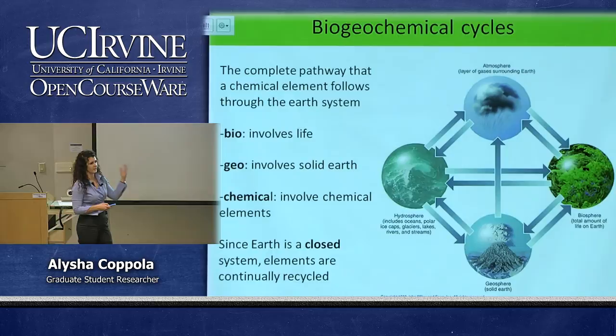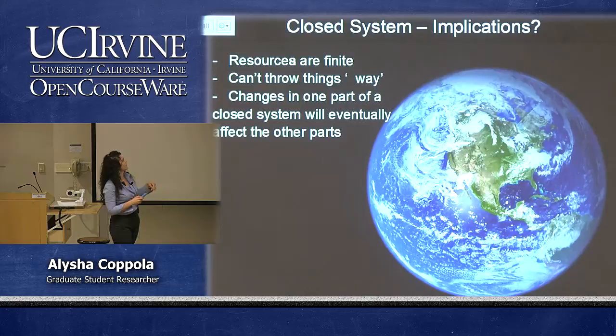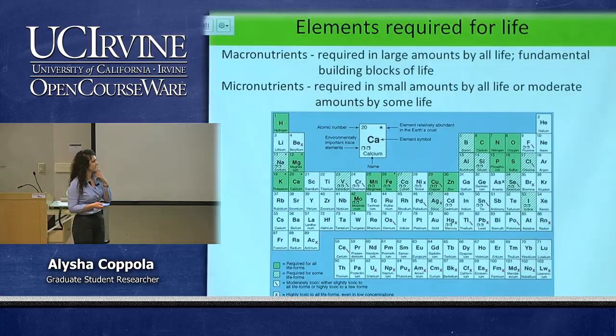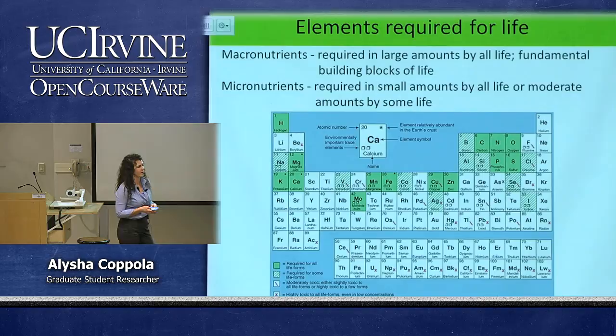Together it's a closed system and each of these different systems are closed together, but we're looking at the transformations between the atmosphere, biosphere, geosphere, and hydrosphere. So what elements are required for life? We divide them up into macronutrients and micronutrients. Macronutrients are required in large quantities and are essential for life — those are the elements shown in green on the periodic table.